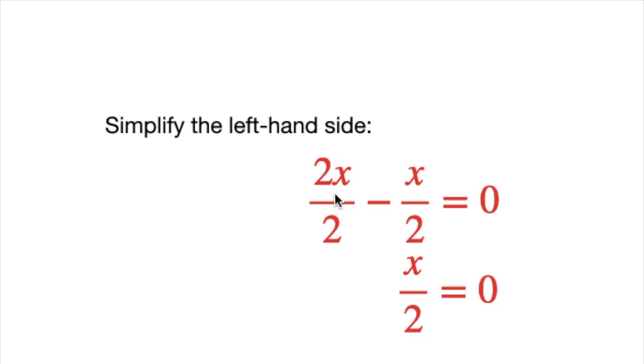Now, simplify the left-hand side. Since x is the same as 2x/2, we have 2x/2 - x/2 = 0. Combining the fractions gives us x/2 = 0.